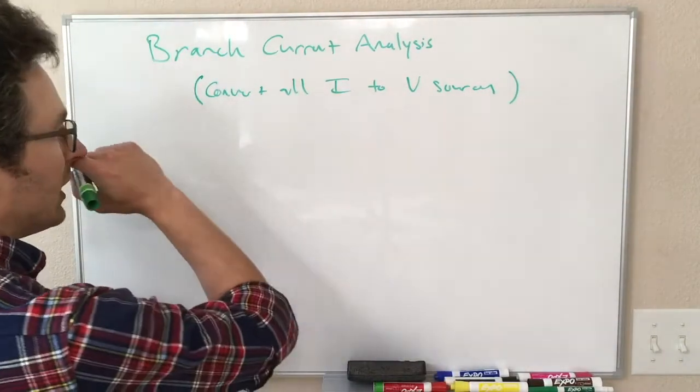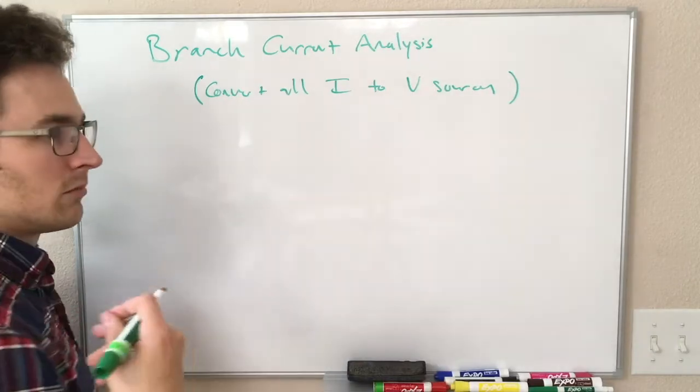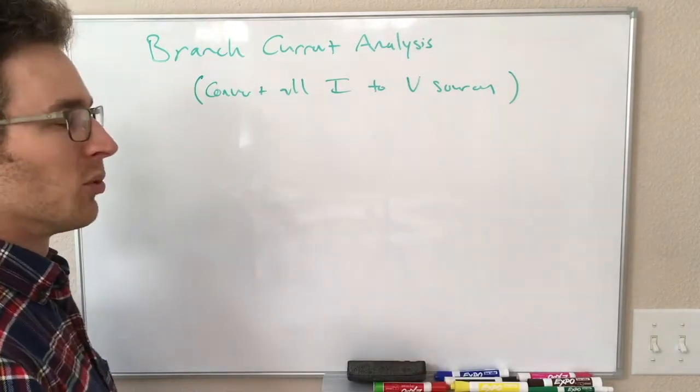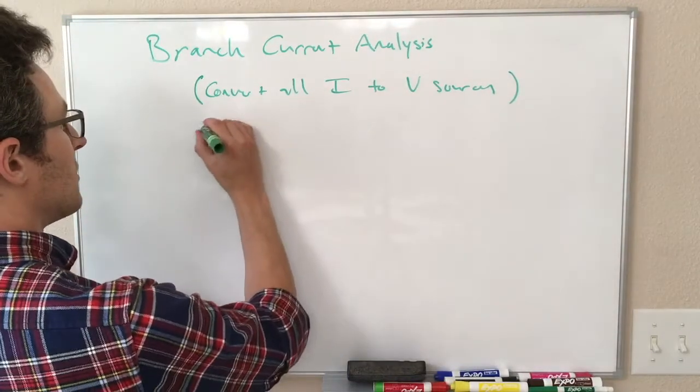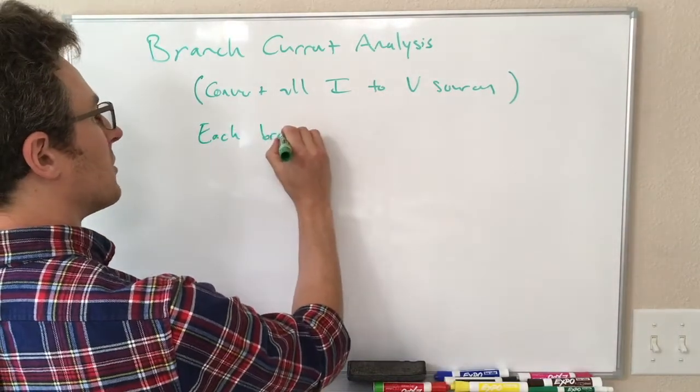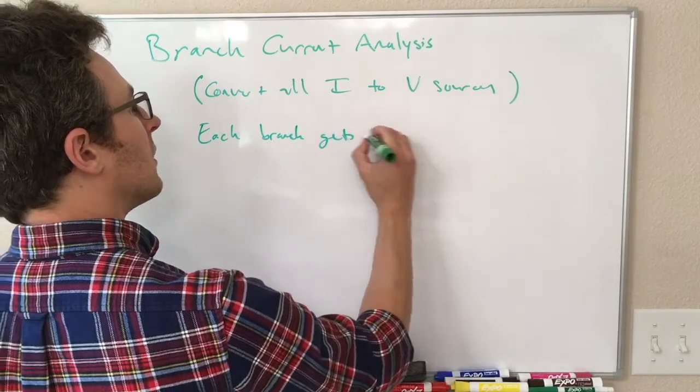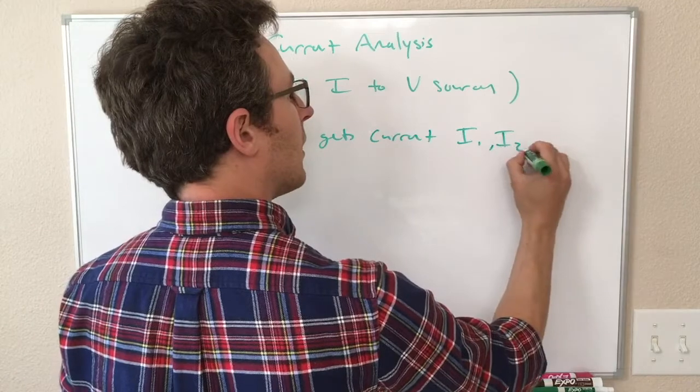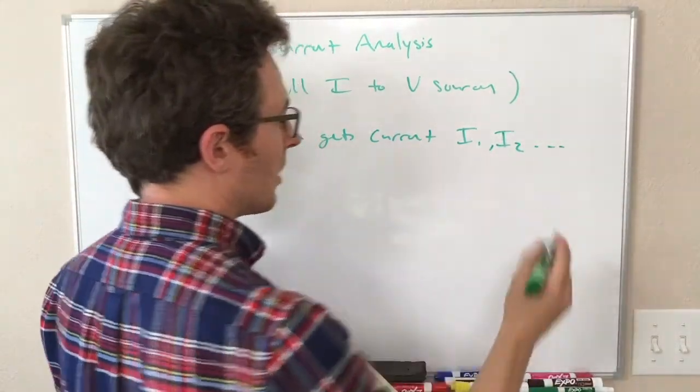We assign a value of current or a variable for current in each of the branches. So each branch gets a current, I1, I2, you know, whatever you can name them, whatever you want.